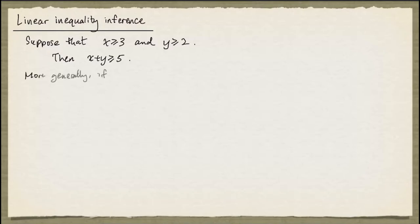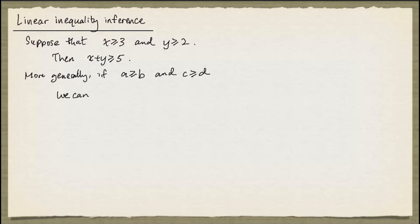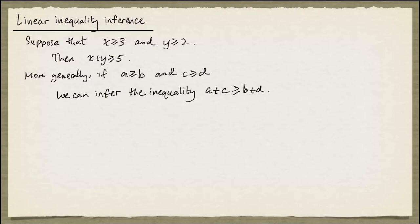And more generally, if we have a at least b and c at least d, then we can infer the inequality a plus c greater than or equal to b plus d. And we say that this inequality is obtained from adding a greater than or equal to b and c greater than or equal to d.